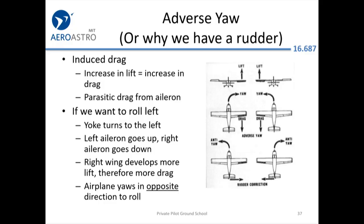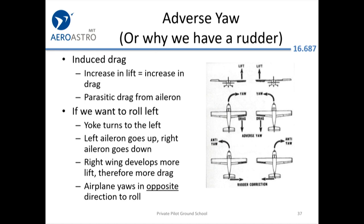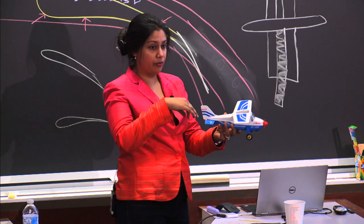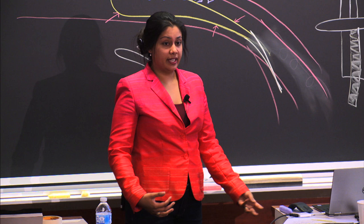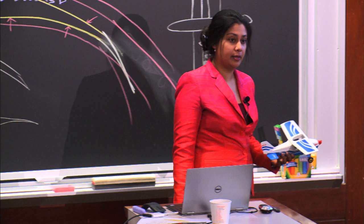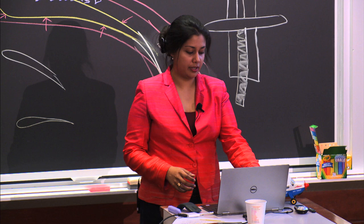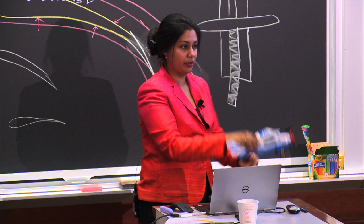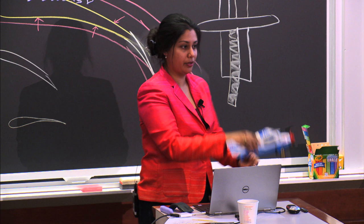There are cases where you'll encounter adverse yaw — basically using the yaw direction opposite to the direction you're trying to turn with roll. This relates to coordinated versus uncoordinated flight. When in the airplane, the rudder and yaw are controlled by your feet on the pedals. The yoke controls pitch front-to-back, and turning it controls roll. You use your feet for that third direction — the yaw.